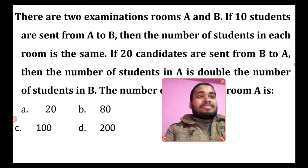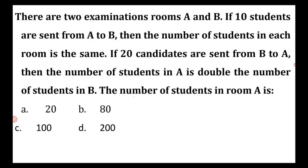So, with the first question: there are two examination rooms A and B. If 10 students are sent from A to B, then A minus 10 and B plus 10 — the number of students in each room is the same, that is equal.